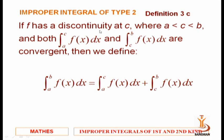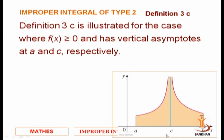Now consider a < c < b where f has a discontinuity at c — c lies strictly between a and b, and at c the function is not defined. We split into two integrals: from a to c and from c to b. This gives limits from a to c-delta₁ and from c+delta₂ to b. In Type 1 we had horizontal asymptotes; here we have vertical asymptotes.